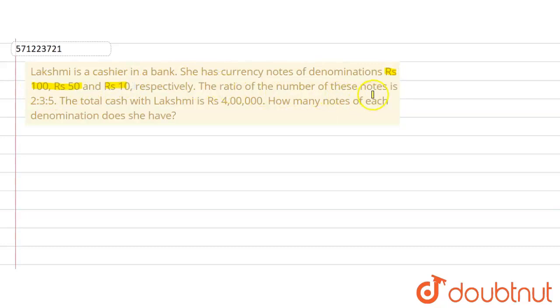The ratio of number of these notes is 2 ratio 3 ratio 5. The total cash with Lakshmi is rupees 4 lakh. How many notes of each denomination does she have?